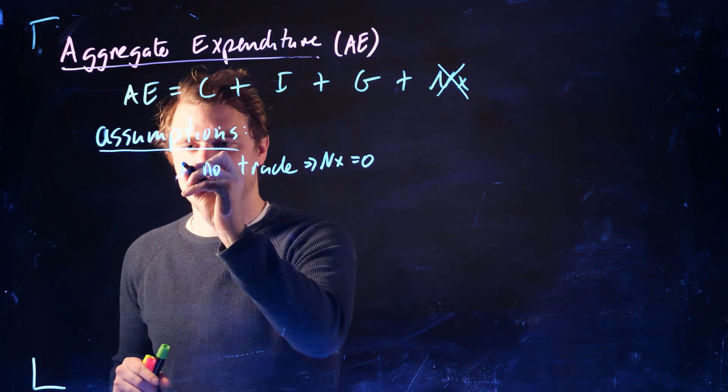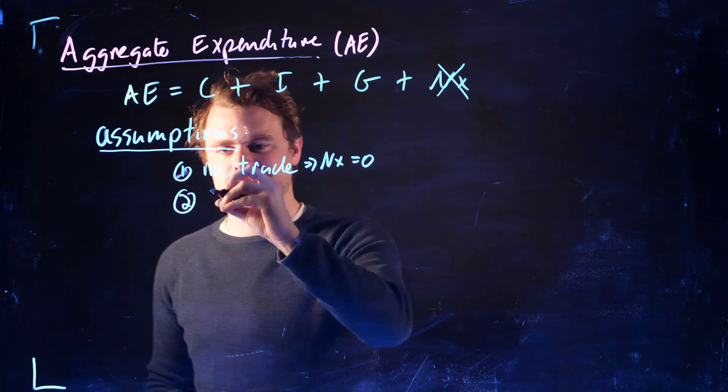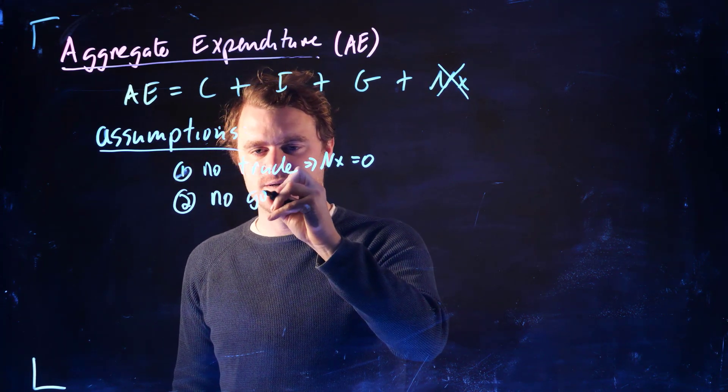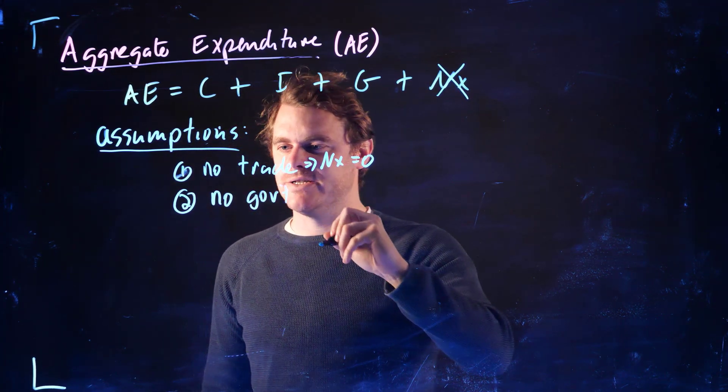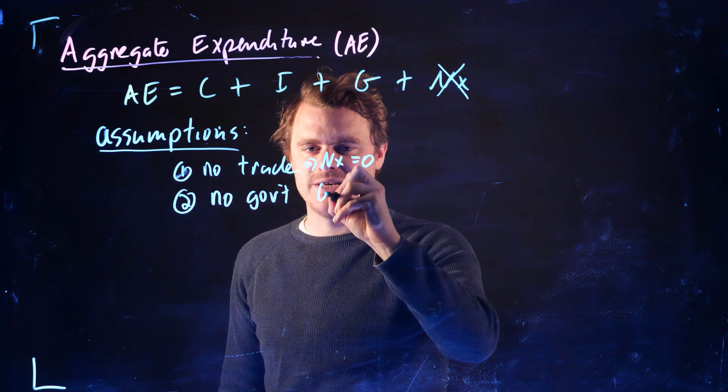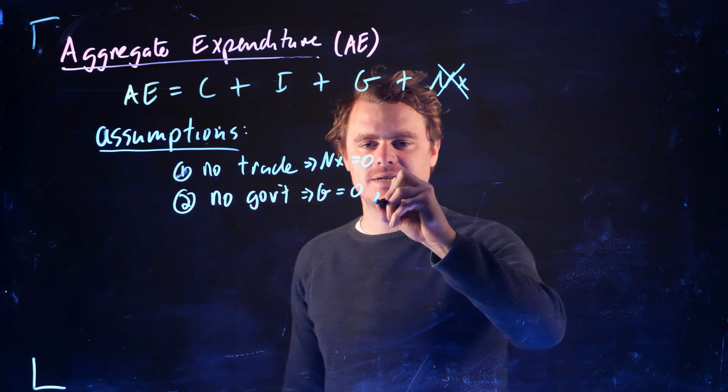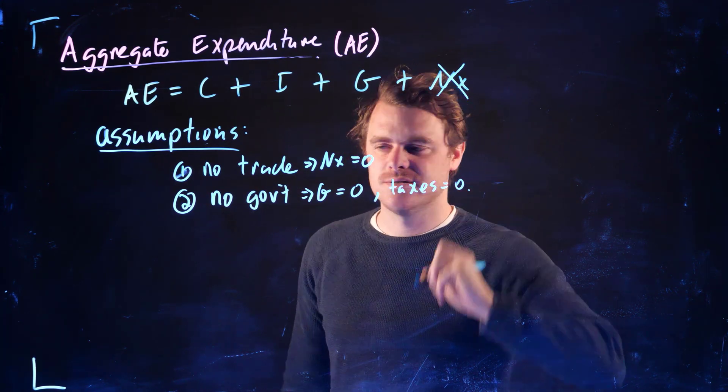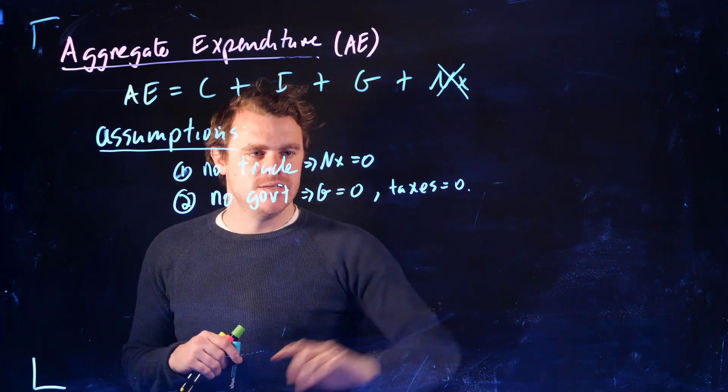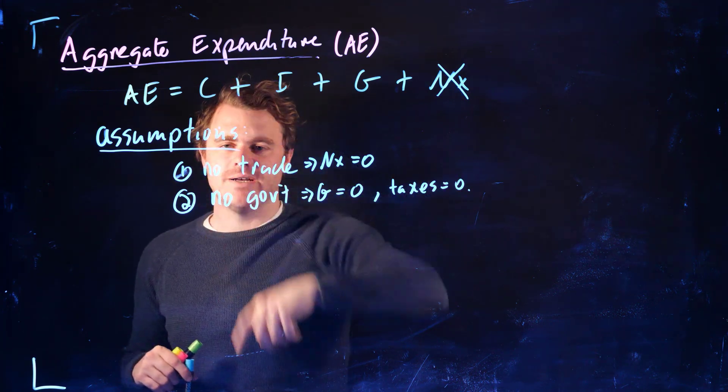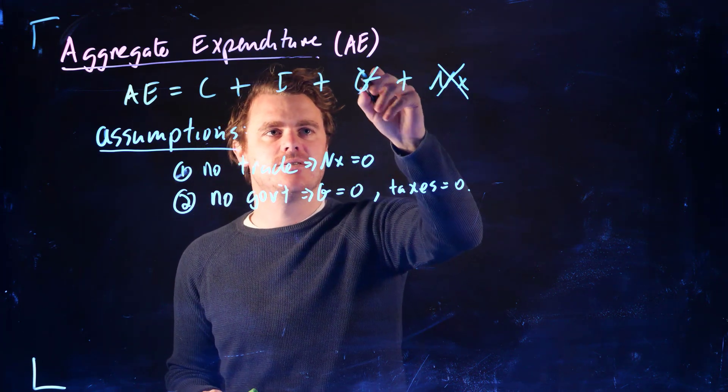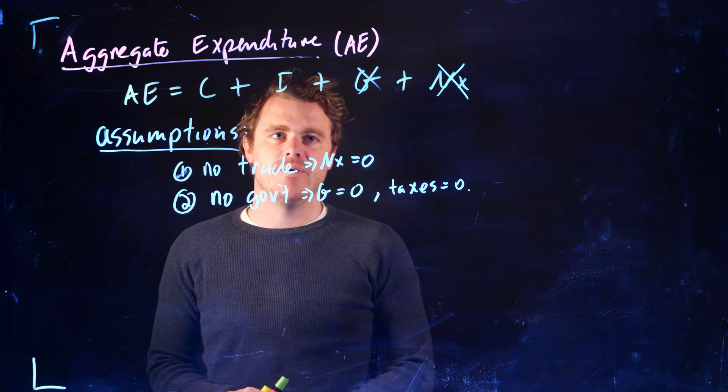Maybe I'll number them. The second is that there's no government. So this is a libertarian's dream here. There's no government, which means that government expenditure equals zero and taxes are equal zero. This will play a role when we talk about consumption. And so that means we've dropped out the G.